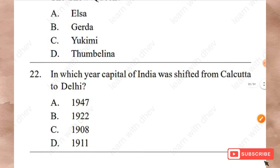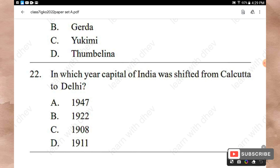Question 22: In which year was the capital of India shifted from Calcutta to Delhi? Options: 1947, 1922, 1908, 1911. The right answer is Option D — 1911.